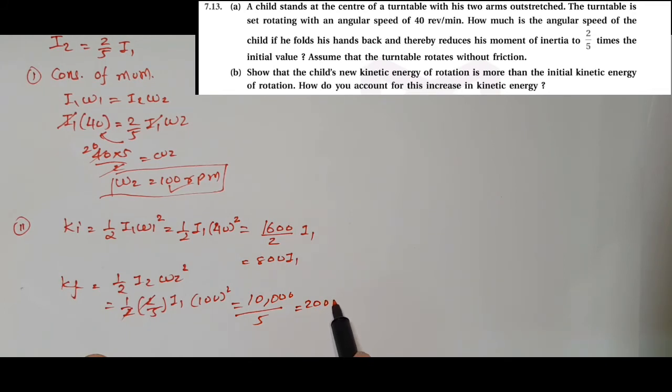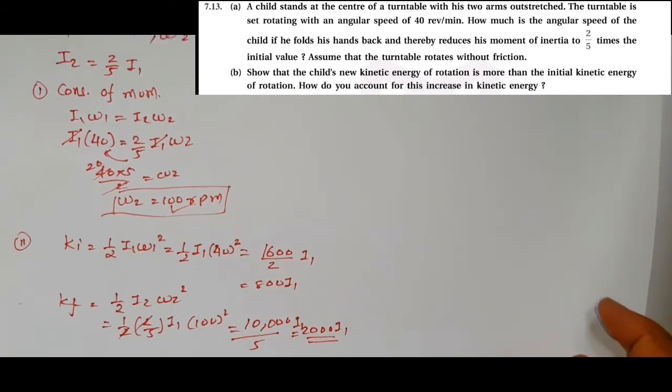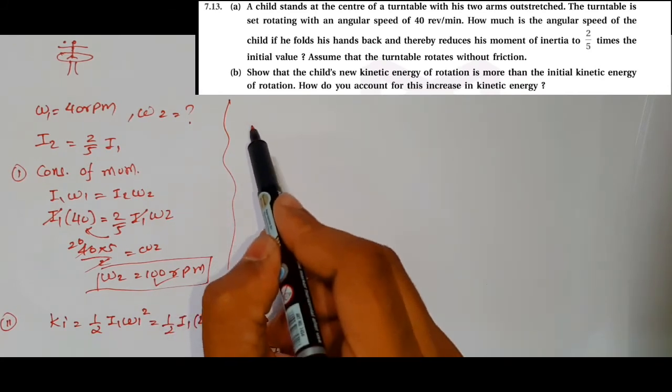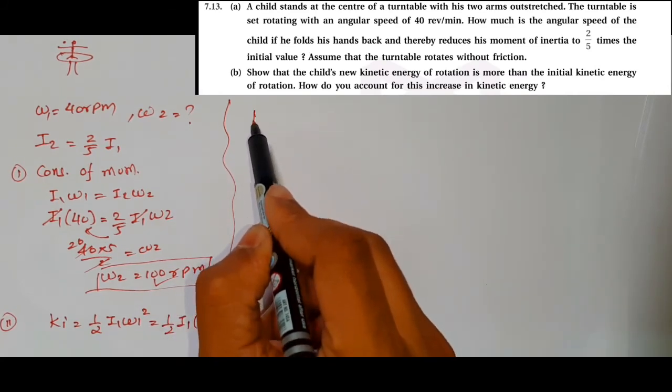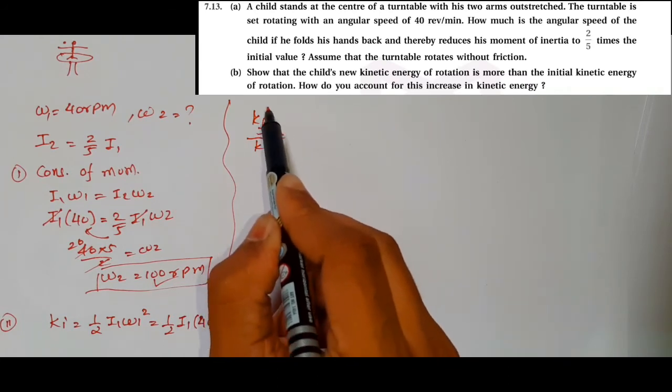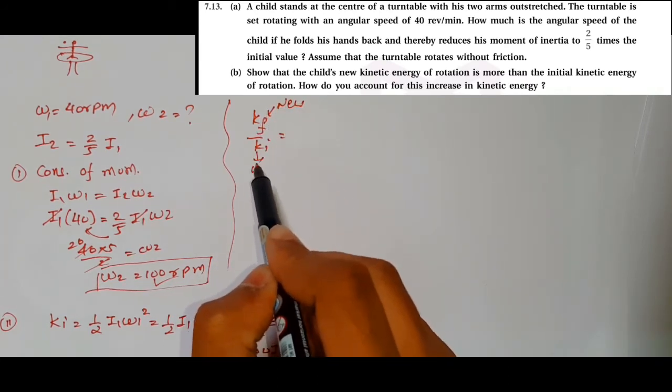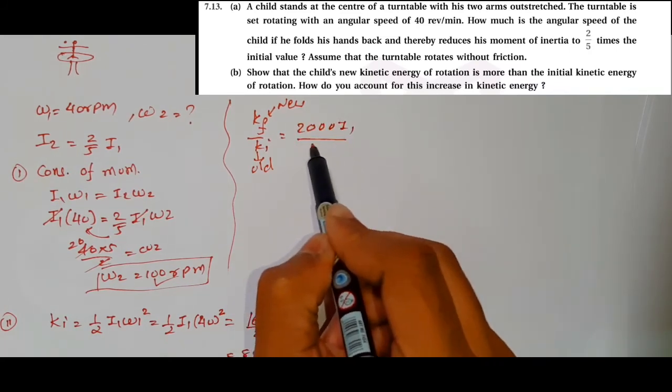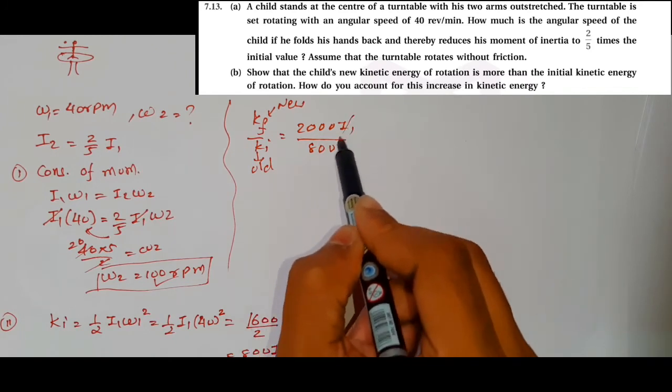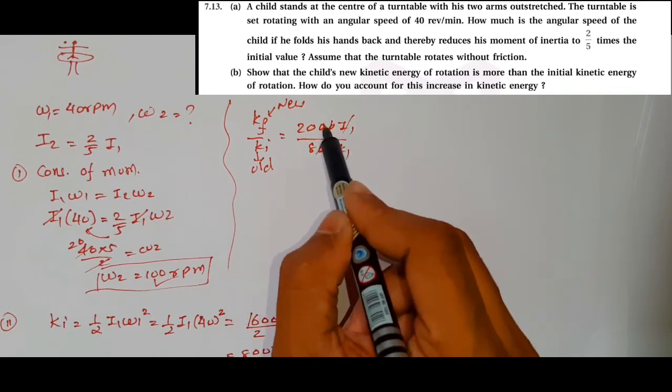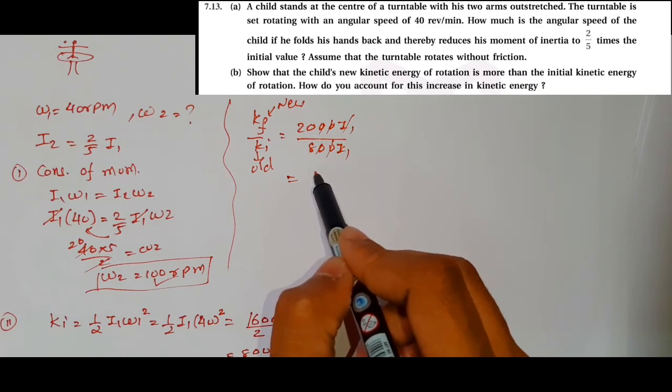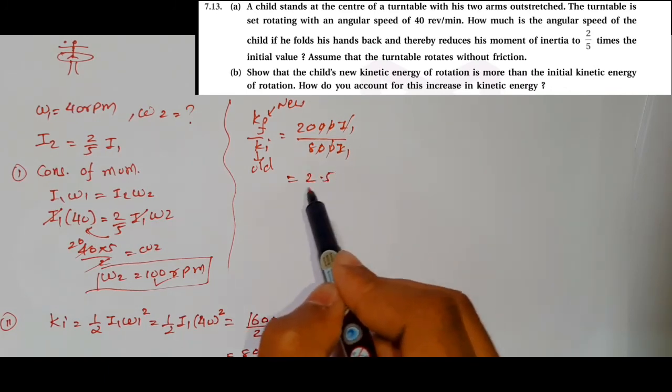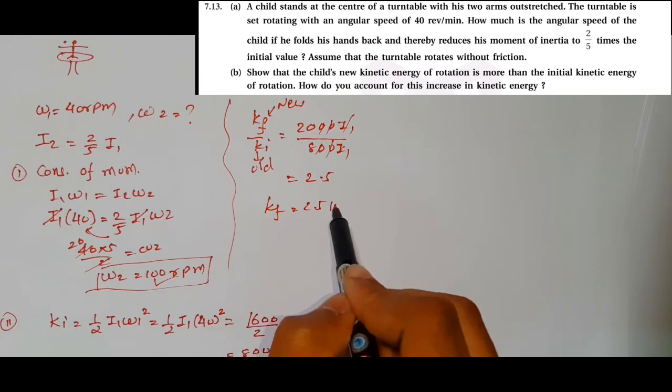Now we compare them. The new kinetic energy (final) divided by initial: Kf/Ki equals 2000*I1 divided by 800*I1. The I1 cancels out, giving us 2000/800, which equals 2.5. So we can say Kf equals 2.5 times Ki.